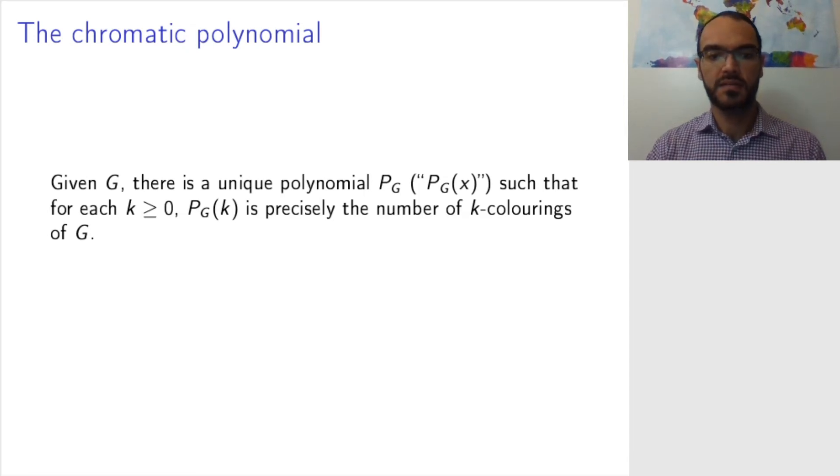So, let us conclude and formalize what we have learned. Given a graph, you get this P_G of k, and you can show that there is a unique polynomial that gives you the number of k colorings of G.